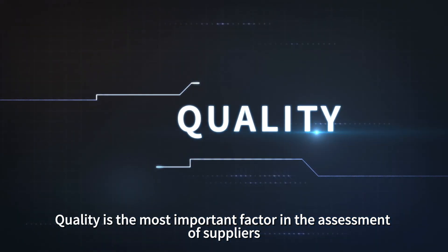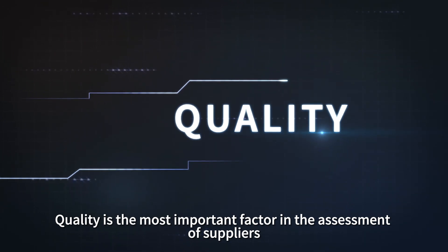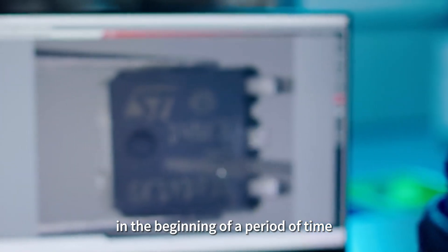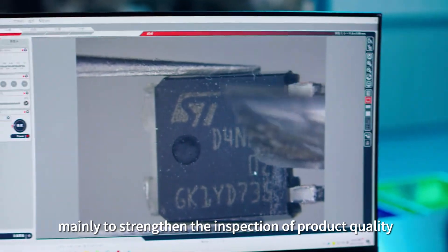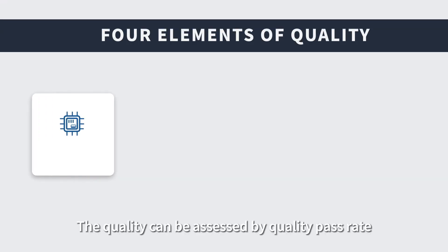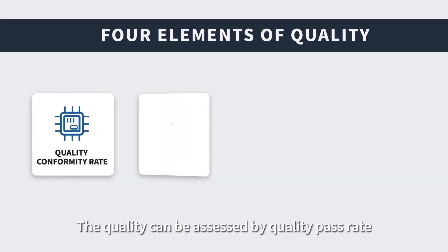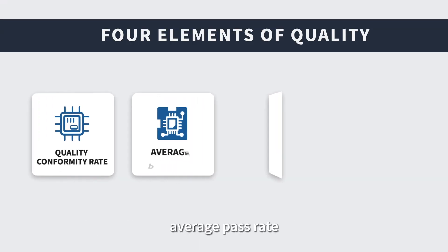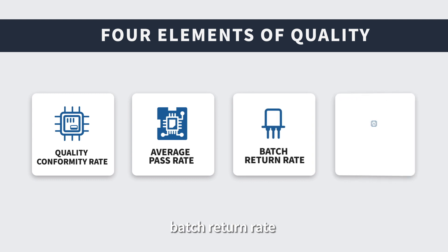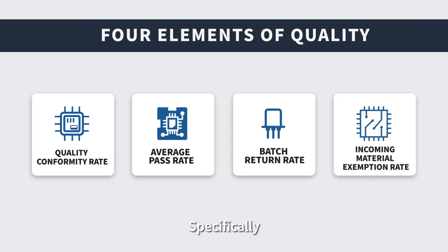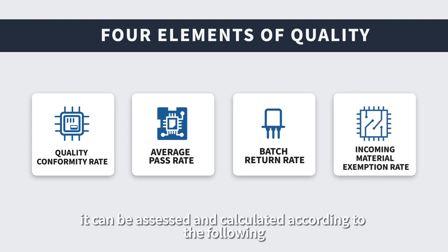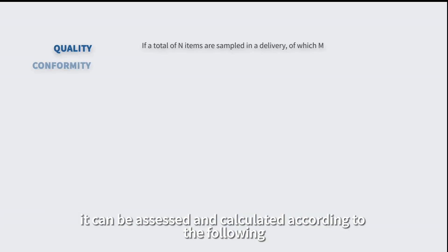Quality is the most important factor in supplier assessment. In the beginning of a cooperation period, it is important to strengthen inspection of product quality. Quality can be assessed by quality pass rate, average pass rate, batch return rate, and incoming material exemption rate.